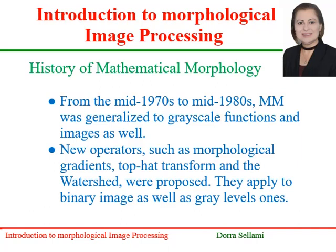From the mid-70s to the mid-80s, mathematical morphology was generalized to grayscale functions and images as well. New operators such as morphological gradients, top hat transform, and the watershed were proposed. They applied to binary images as well as gray level ones.